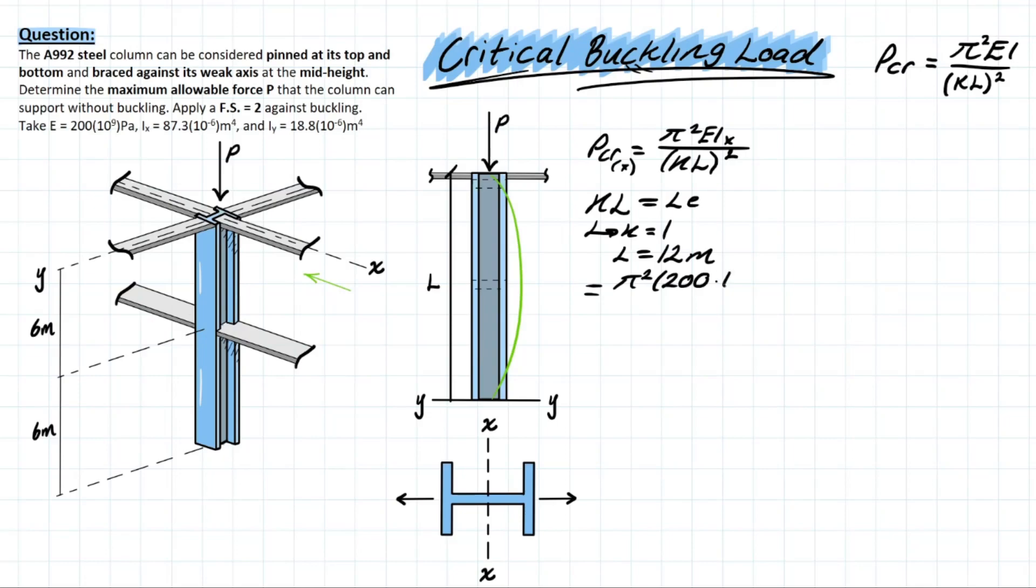Plugging that in, we have E, which is 200 × 10⁹ pascals (N/m²), and the Ix value, which is 87.3 × 10⁻⁶ m⁴, all over KL, which is 1 × 12 squared in meters squared. Solving this gives us a newton value which converted to kilonewtons is 1196.7 kN.